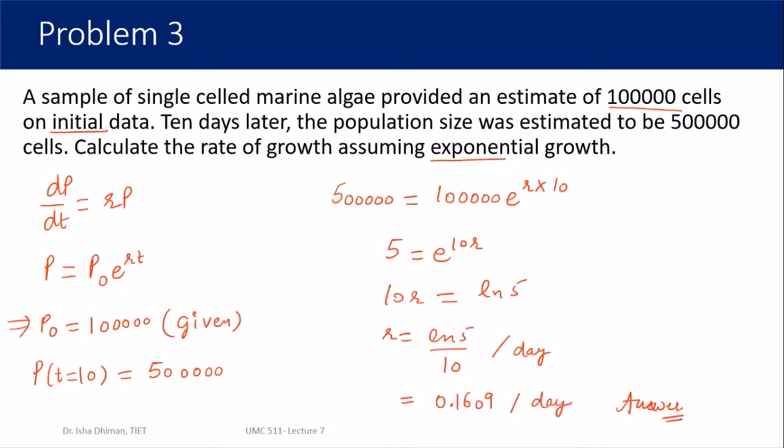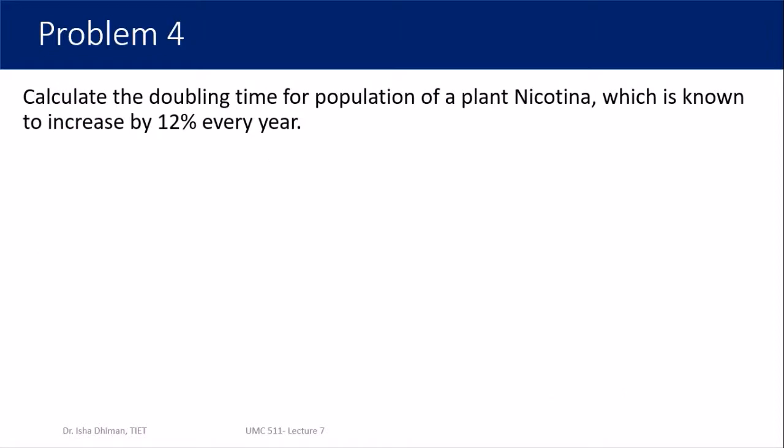This gives r ≈ 0.1609 per day. It's important not to forget the unit of the rate of growth — since rate has dimensions of per unit time and we used 10 days, the unit is per day. In percentage terms that's about 16% per day. Here again we used the exponential growth model, and that concludes Problem 3.